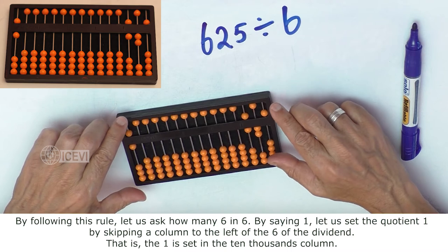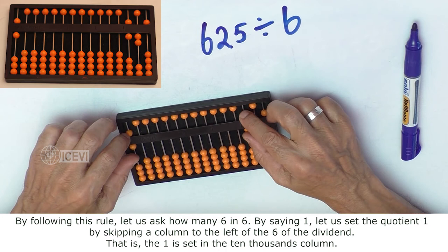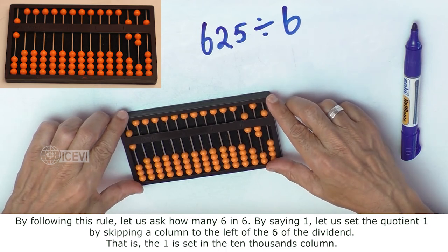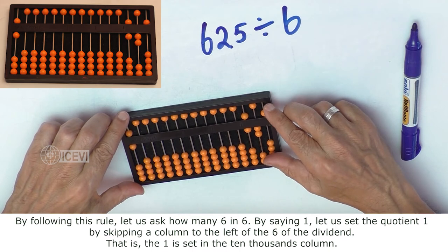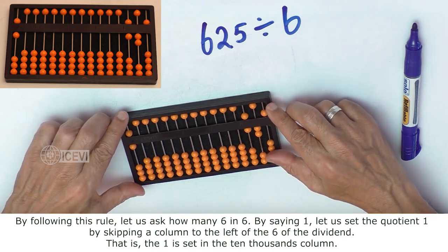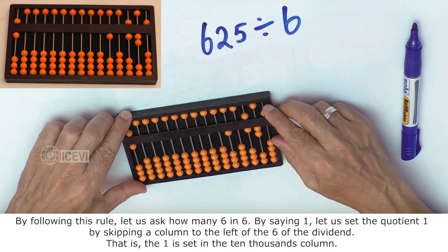By following this rule, let us ask how many 6s in 6 by saying 1. Let us set the quotient by skipping a column to the left of 6 of the dividend, that is, the 1 is set in the 10,000 column.